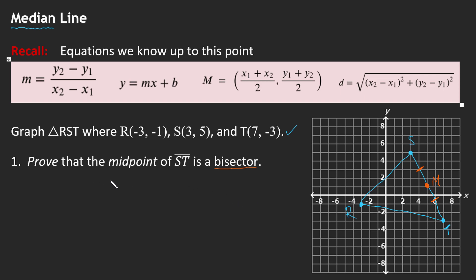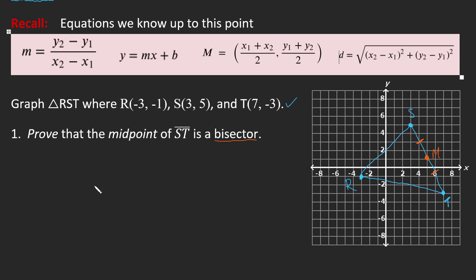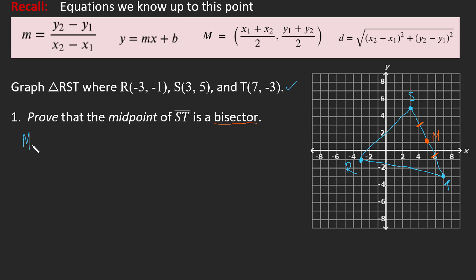So we're going to first find that midpoint. The midpoint equation is not particularly difficult. So we're going to find the midpoint of ST and the X values, 3 and 7, we'll add those, divide by 2. The Y values are 5 and negative 3, and we will add those, divide those by 2. That's 10 over 2, so 5, and that's 2 over 2, so 1. So it looks like the midpoint is at 5 and 1.